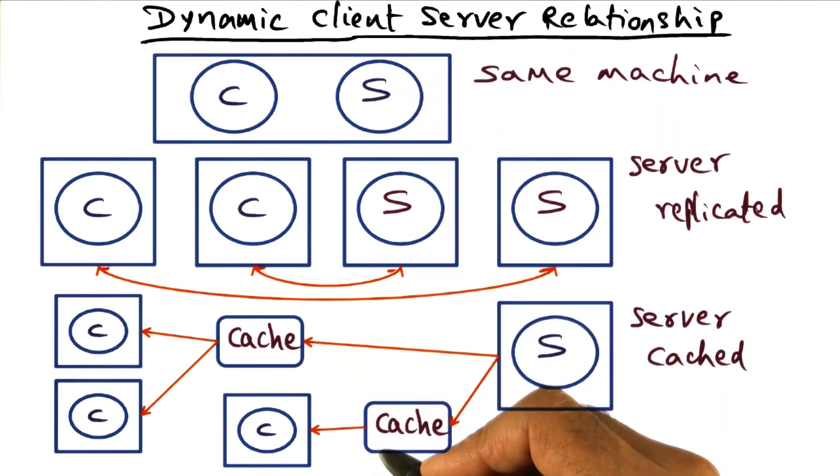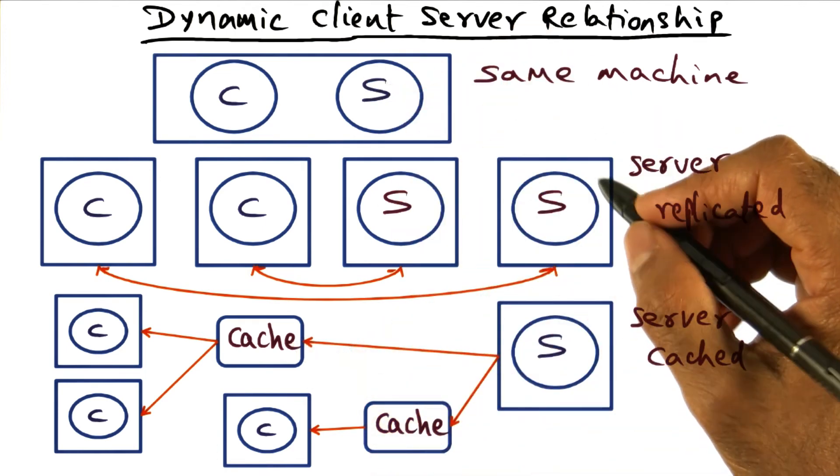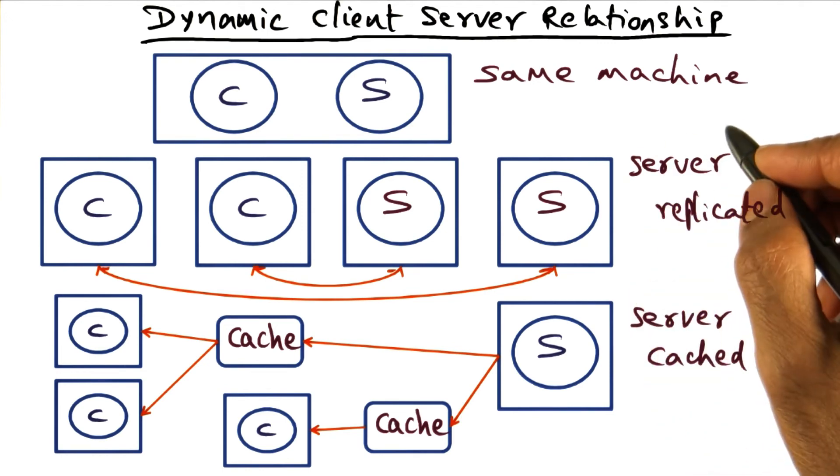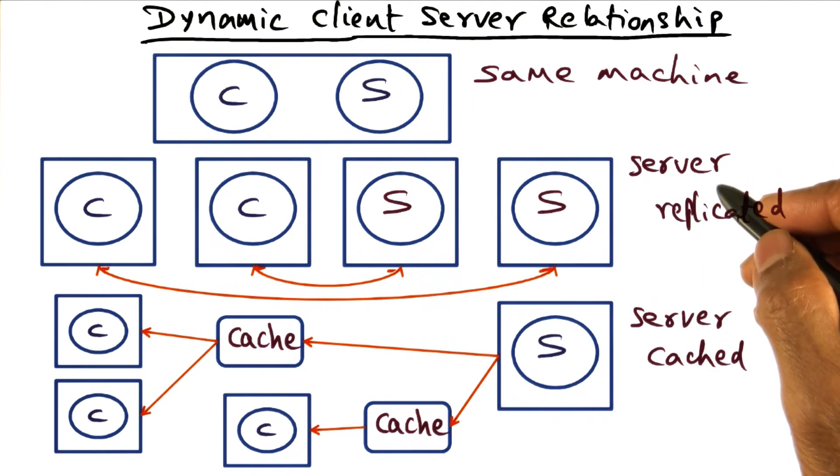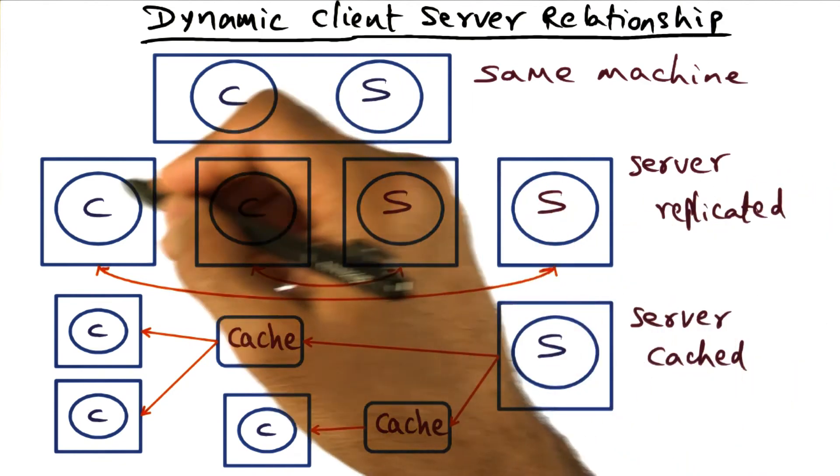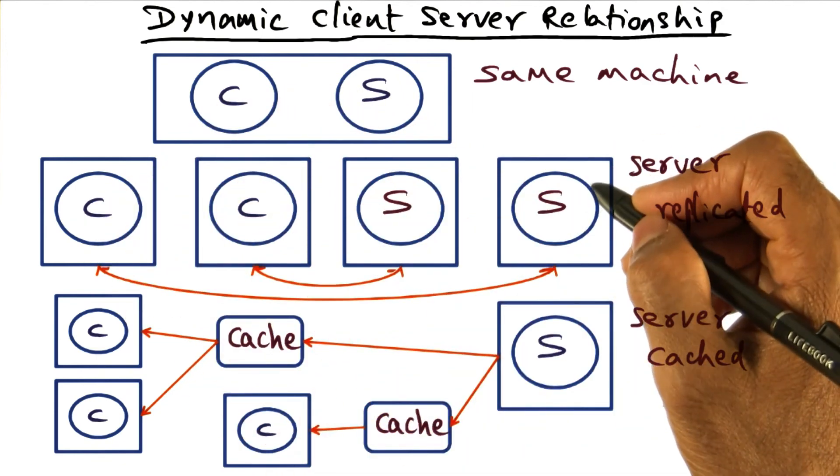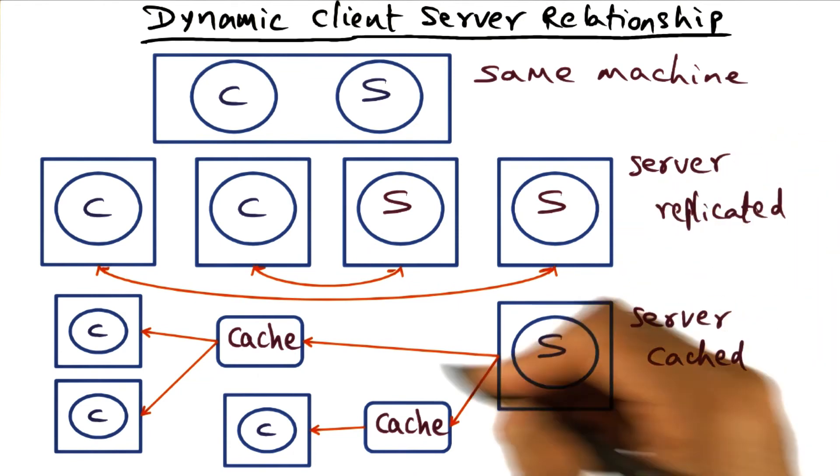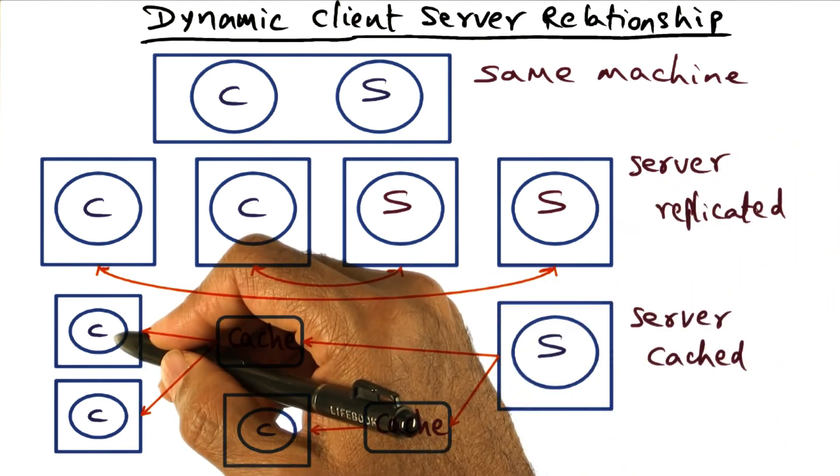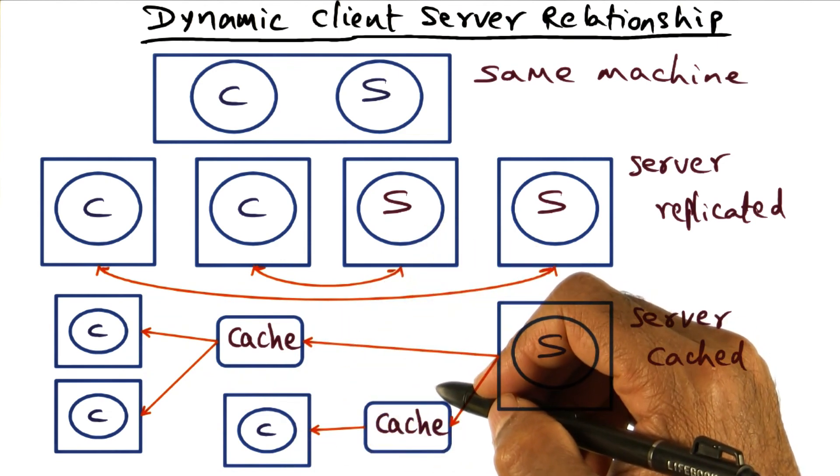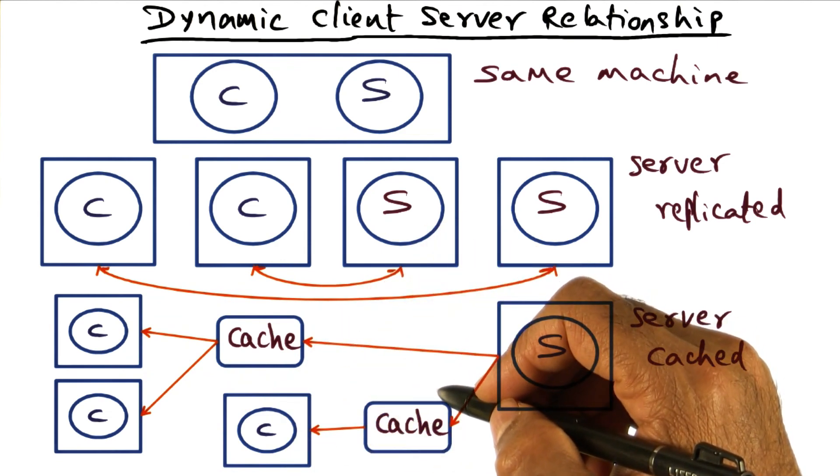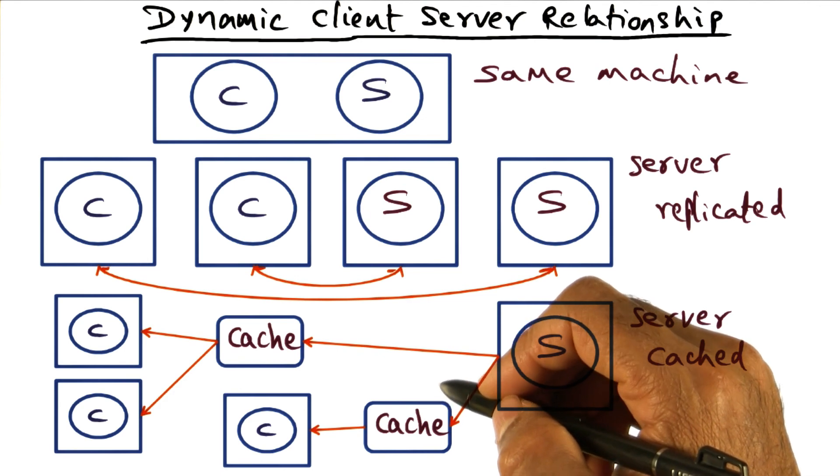Now all of this sounds like magic in terms of how this client-server relationship is being dynamically orchestrated. Whether they are on the same machine, or whether we dynamically decide to replicate the servers and decide to route the request to different servers, or we want to cache the servers and route the client request to different cached copies. All of these are dynamic decisions that are taken, and how is this done? Well, that's the part that we're going to see next.